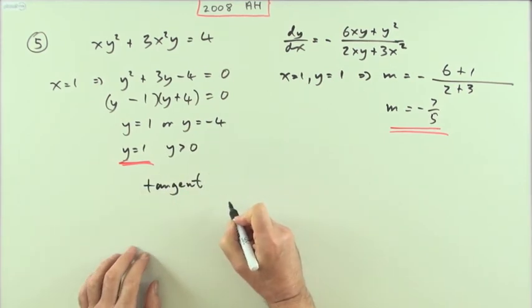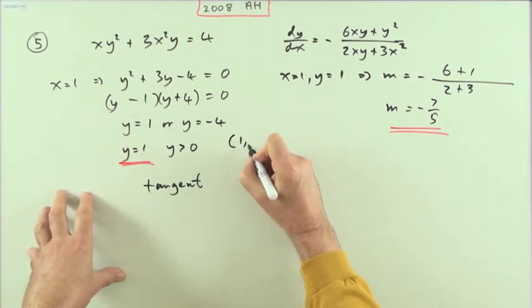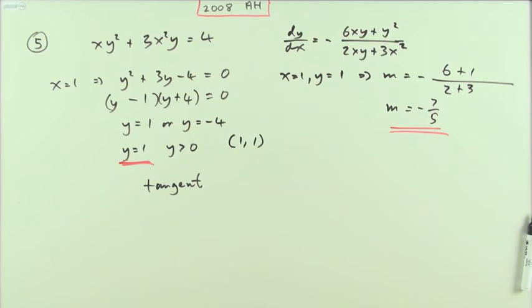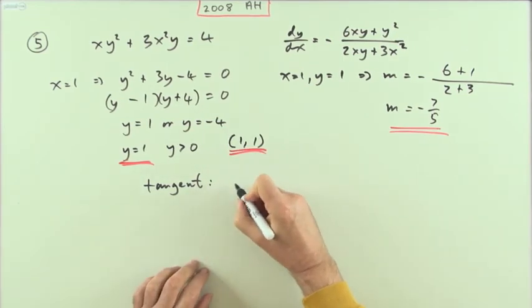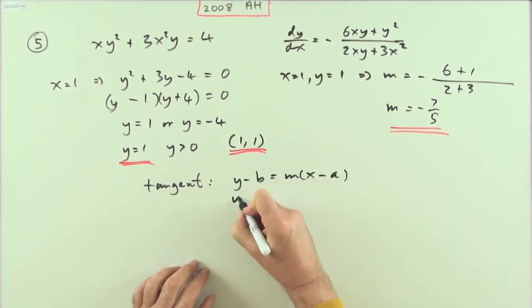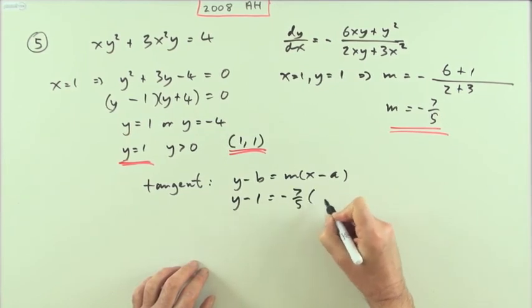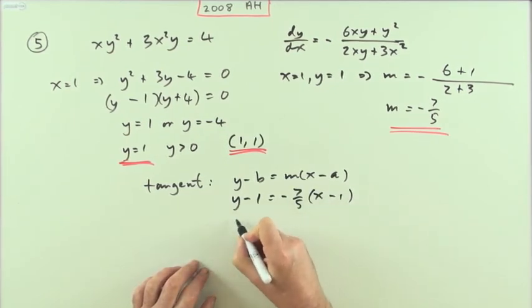Then the tangent. Well all you need for a straight line is a point on it, I've got a point on it, maybe I'll state it explicitly, that was the point (1,1), and its gradient. And I've got its gradient, and then you can just feed it in. Y minus b is mx minus a, if you wish to write that first, or just go straight in with y minus 1 is negative 7 fifths of x minus 1.